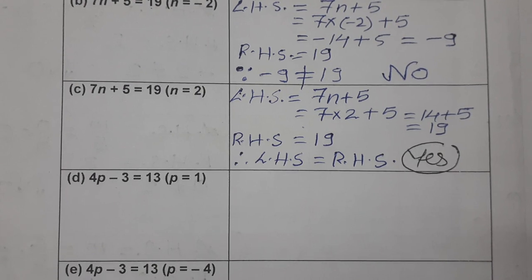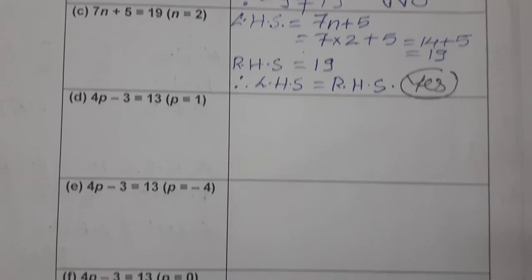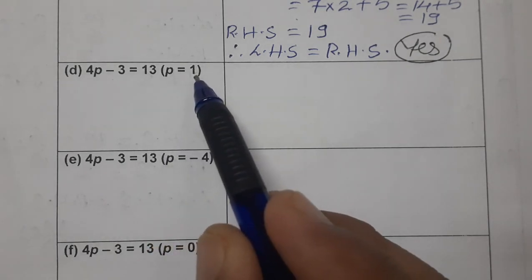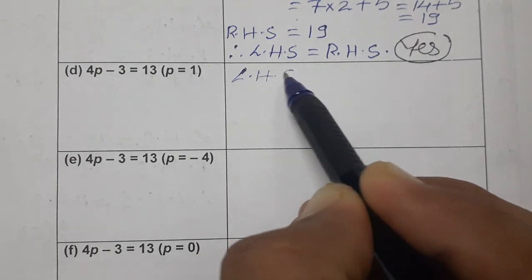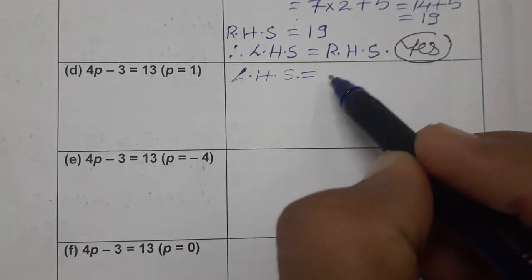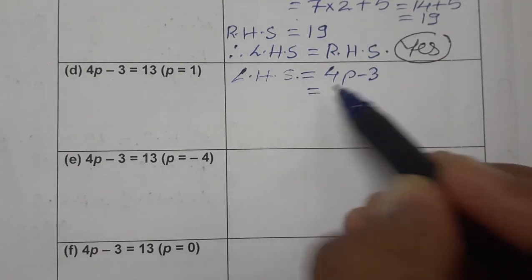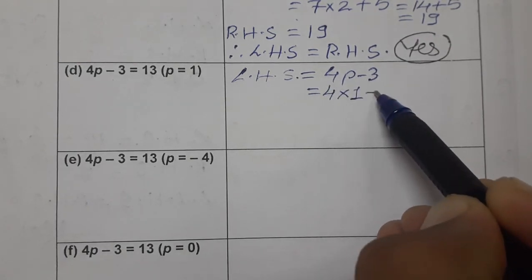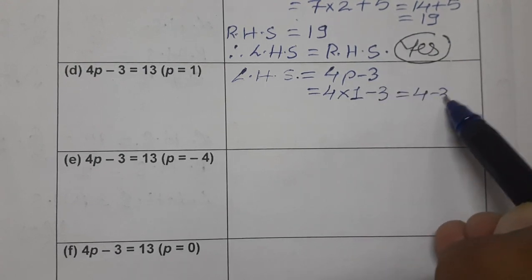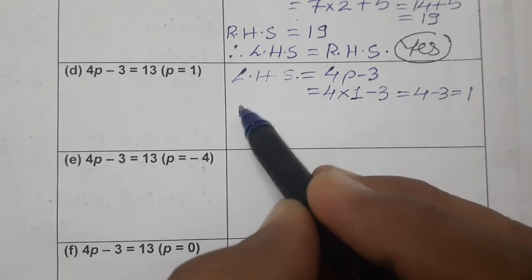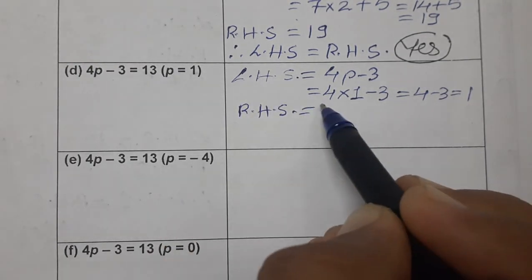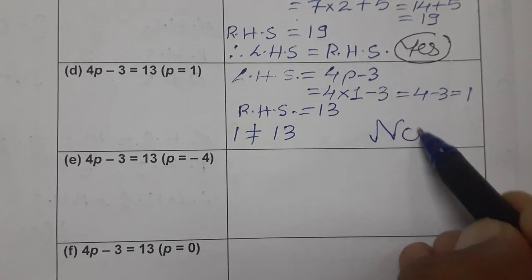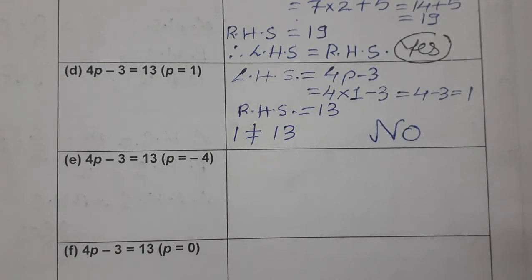Now part (d): the equation is 4p − 3 = 13, and the value of p given is 1. Left hand side is 4p − 3. Putting p = 1: 4 × 1 = 4, then 4 − 3 = 1. The RHS is 13. Since 1 is not equal to 13, the answer is no — p = 1 is not the solution of the equation.